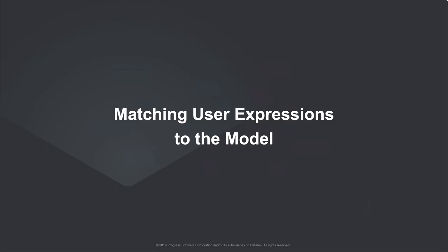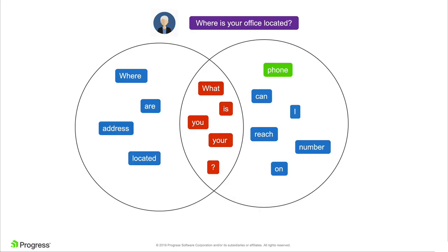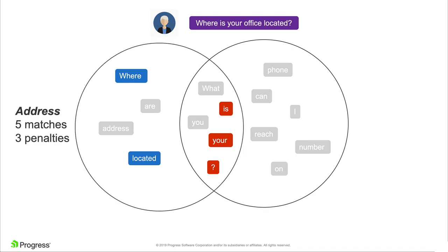Once we have created this model, we can use it to match various expressions. For example, if the user says something like 'Where is your office located?', we can identify the tokens that match. We have 'where', 'is', 'your', 'located', and a question mark — meaning we match five tokens to the address Q&A, of which three are penalized because they are in common, and we match three to the phone Q&A but all of them are penalized. So the address Q&A is the one that will win this match.